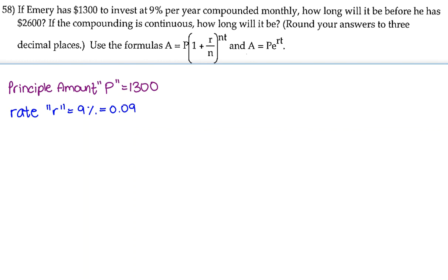Furthermore, we're trying to see how long it'll be before Emery has $2,600. So our ending amount is $2,600.